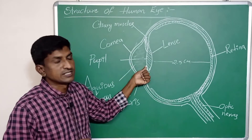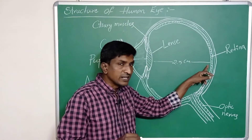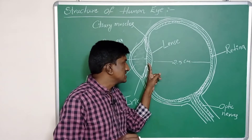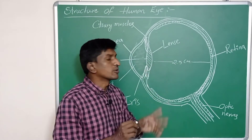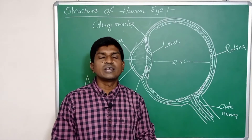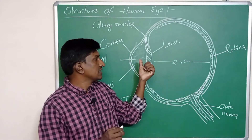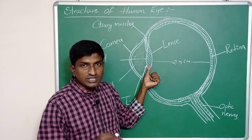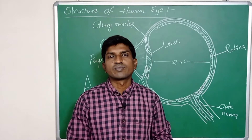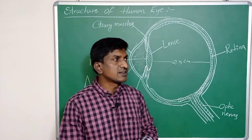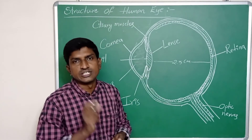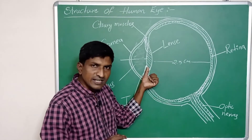...wherever the object is, the image is always formed on the retina, which means the image distance is always 2.5 centimeters from the lens. How is this possible? It is possible only when the radius of curvature or the focal length of the eye lens changes.